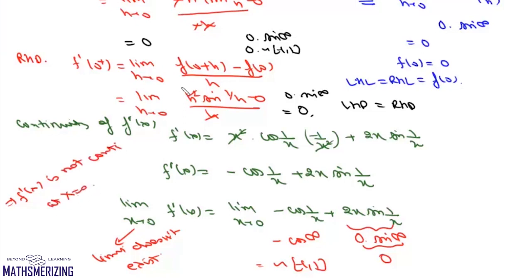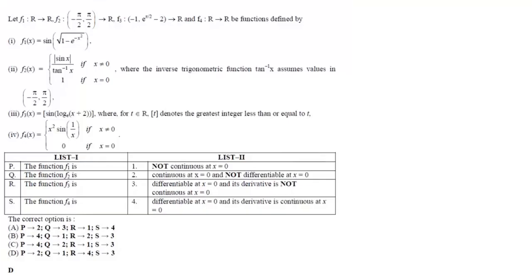So for this function, f is differentiable at 0 but its derivative f'(x) is not continuous at x = 0. Now we are given four functions f1, f2, f3, f4 and we have to match them.